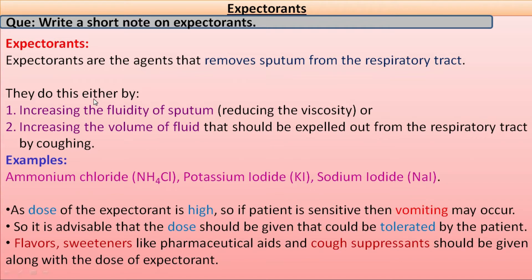How do they work? They work by either of two mechanisms. First, they can increase the fluidity of sputum by reducing its viscosity, so that fluidity increases. Second, they increase the volume of fluid so that it is expelled from the respiratory tract by the process of coughing. These are the two mechanisms by which expectorants work.